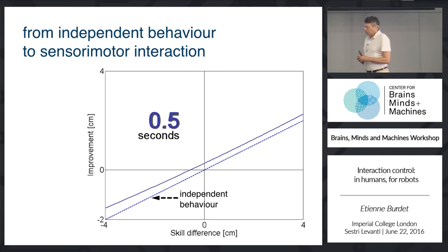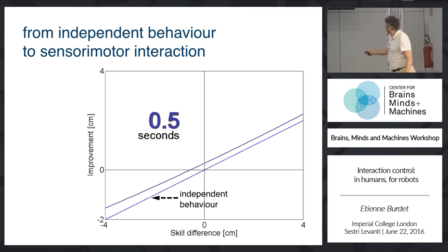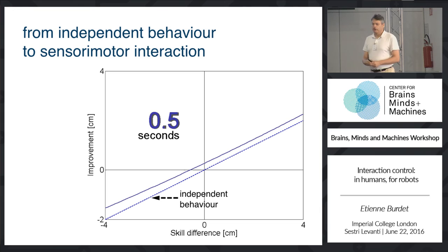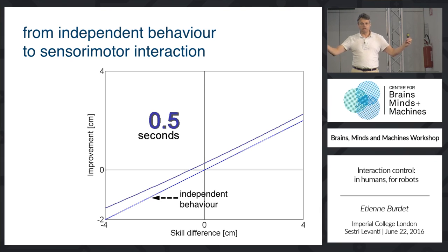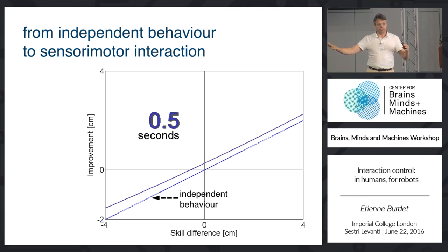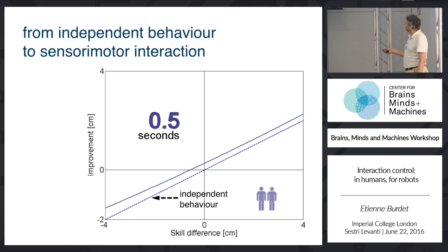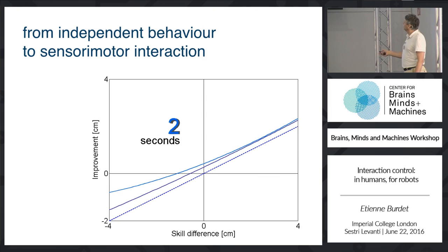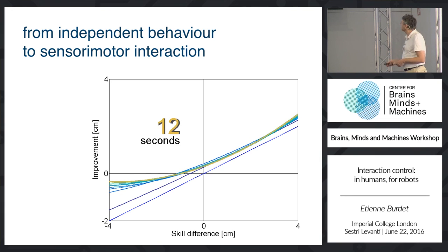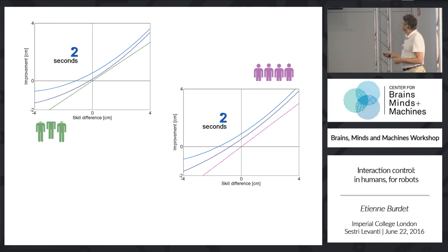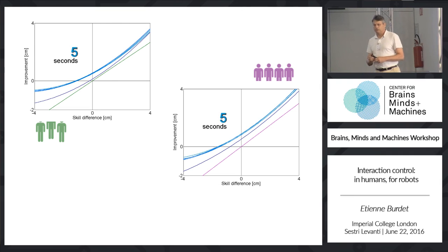How does learning of the interaction with a partner work? Looking at this evolution: the straight line represents the improvement of performance you would have with no model of the other — both partners doing exactly what they would do alone, not caring about the partner. But very soon, you identify the connection with a partner and optimally consider the information from them. With three and four people, you adapt just as fast as with two people.